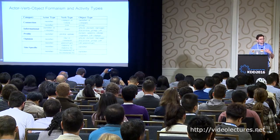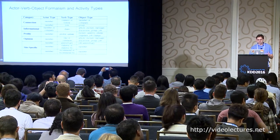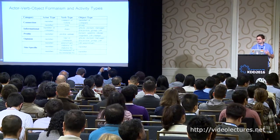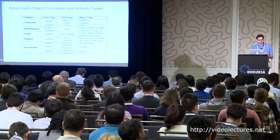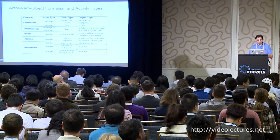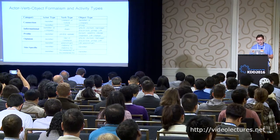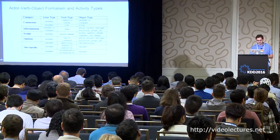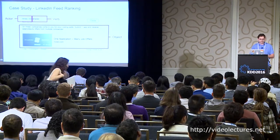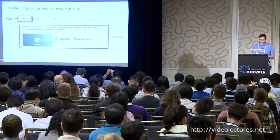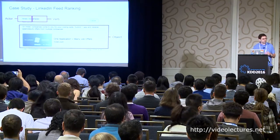For example, the actor is the person or entity that did the action, such as a member in a comment or a company in an advertisement. The verb type is the action — that might be a connection, a share, or that they updated their profile. The object type is the thing that received that action. As a concrete example, in the case of a sponsored advertising post, the actor is the company — in this case, Hired Incorporated — the verb is 'shared,' and the object is a link to their website and a text description.